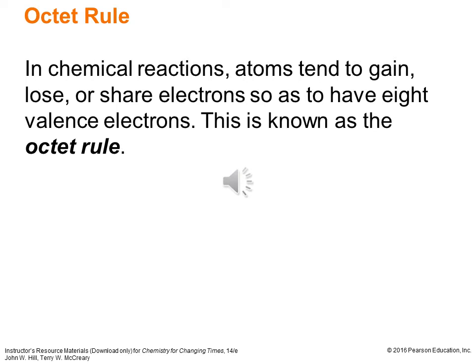Moving back to the octet rule — octet meaning eight. In chemical reactions, atoms tend to gain, lose, or share electrons in such a way that they have eight valence electrons; that's what we call the octet rule. It has a few important exceptions, but as a general rule of thumb it's a pretty good guiding principle for determining how elements combine to make a stable compound. They tend to combine so that either they become ions with eight valence electrons each, or they share so that each has an octet in a molecular compound. We'll talk about a couple of exceptions by the end of this chapter.